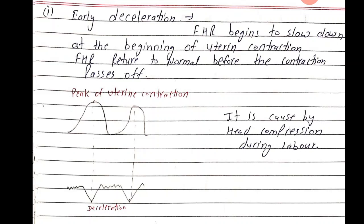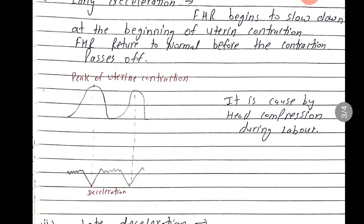Early deceleration: the fetal heart rate begins to slow down at the beginning of a uterine contraction, and the fetal heart rate returns to normal before the contraction passes off. As you can see in the diagram, when the uterine contraction is at its peak, the deceleration occurs. It is caused by head compression during labor.